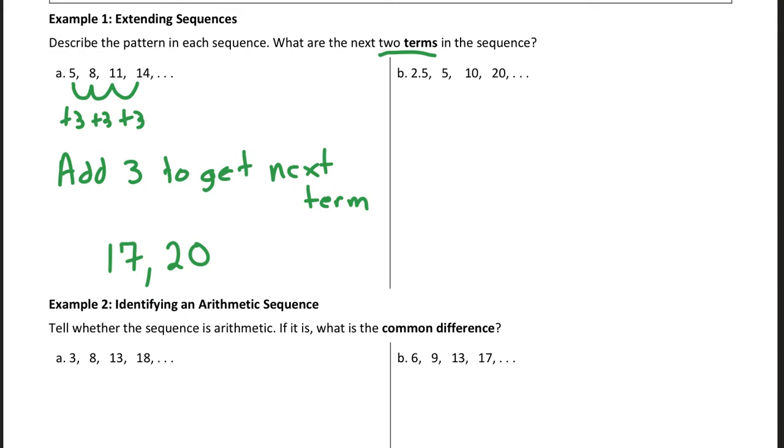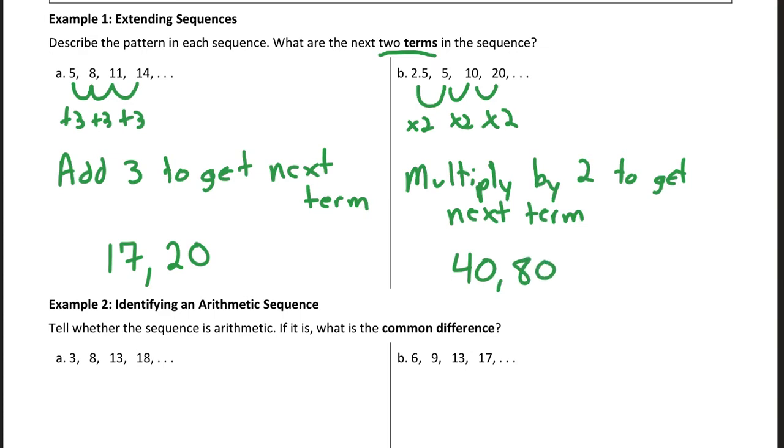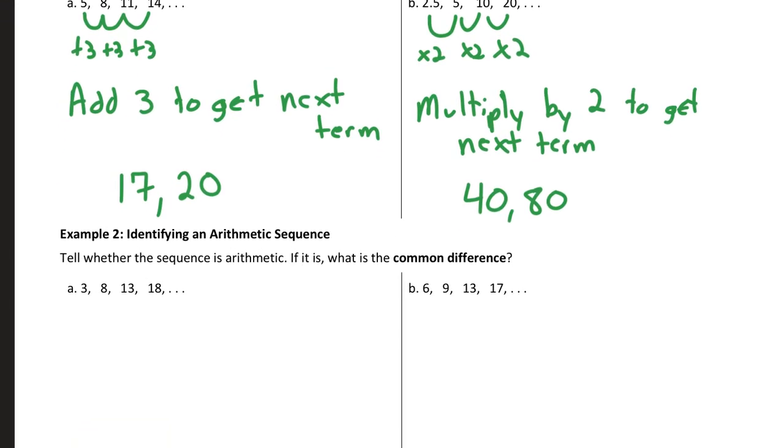In part B, to think about how these are changing, 2.5 to 5, 5 to 10, 10 to 20, you're multiplying by 2, so I would say multiply by 2, to get the next term. So if I keep following that pattern of multiplying by 2, my next term would be 40, the term after that would be 80, so be able to tell a pattern in a sequence and use that pattern to predict the next two numbers, or to list the next two numbers.